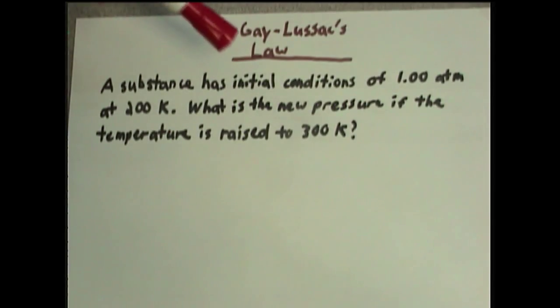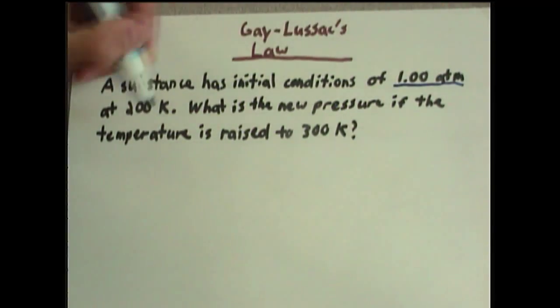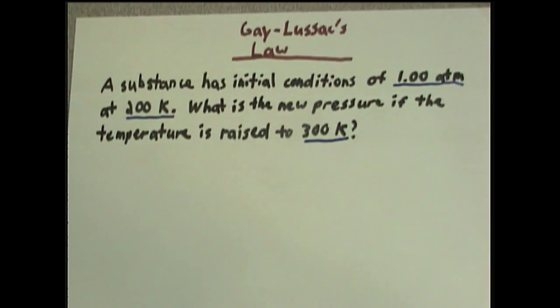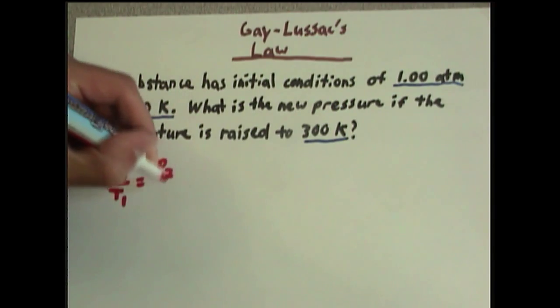A substance has initial conditions of 1 atmosphere at 200 kelvins. What is the new pressure if the temperature is raised to 300 kelvins? Now, if you'll notice, this problem is an example of Gay-Lussac's law because we have an atmosphere, a pressure that is, and two temperatures. Now, if you will recall, the equation for Gay-Lussac's law is P1 over T1 equals P2 over T2.